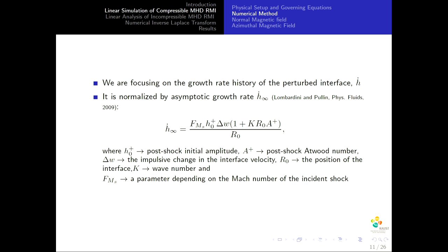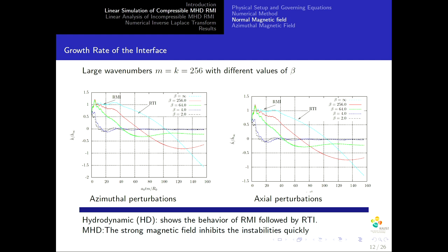We focus on the growth rate history of the perturbed interface, normalized using the asymptotic growth rate proposed by Lombardini in cylindrical geometry. Showing previous published results in the presence of a normal magnetic field: the first case shows purely azimuthal perturbation, and the second shows purely axial perturbation for large wave numbers and different values of beta. The hydrodynamic case shows RMI results similar to the planar case, oscillating around unity. Because of the converging geometry, we have a Rayleigh-Taylor phase that controls the instability. By applying the magnetic field, we can see the suppression of these instabilities.